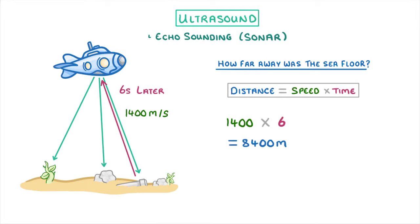The important thing to realise, though, is that it took six seconds for the waves to reach the sea floor and bounce back up again. So the distance from the submarine to the sea floor would be half of 8400, so only 4200 metres.